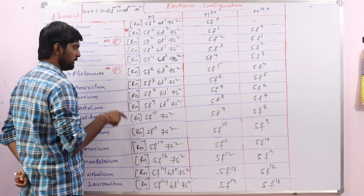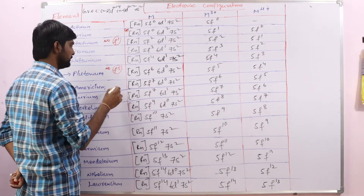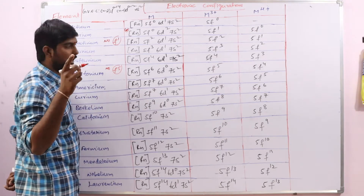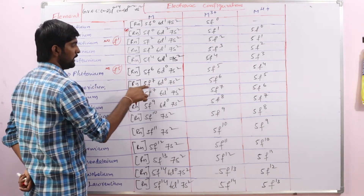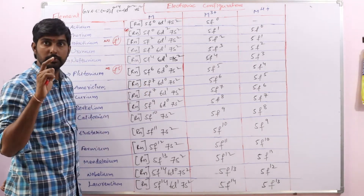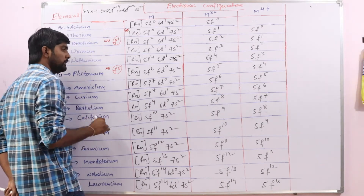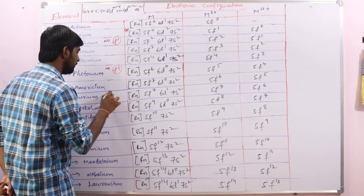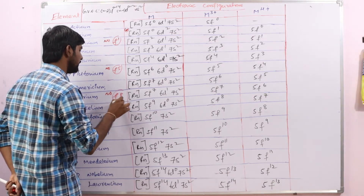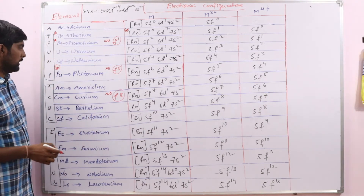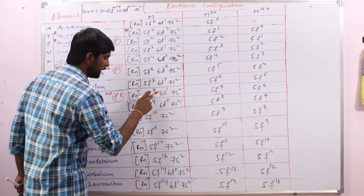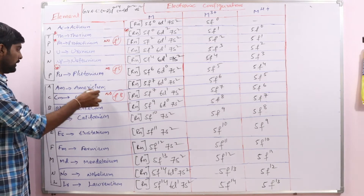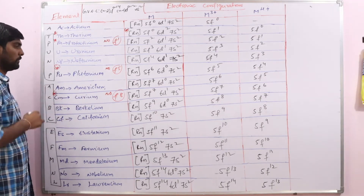The next electron goes to F6, then F7. Then we should get 5F8, but F7 is the half-filled configuration, which is more stable. So the next electron goes to the D orbital instead. We do not find F8 configuration — no F8. Instead we get 5F7, 6D1, 7S2. This is another exception for curium.